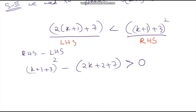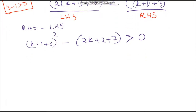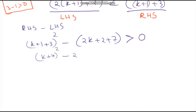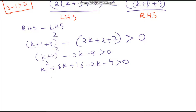The logic is: if 1 is less than 3, then 3 minus 1 should be more than 0. So this should be more than 0. Now solving this: (k plus 4) whole square minus 2k minus 9 is more than 0. Expanding: k squared plus 8k plus 16 minus 2k minus 9 should be more than 0, giving k squared plus 6k plus 7 is more than 0.